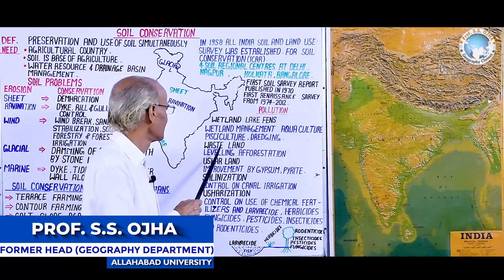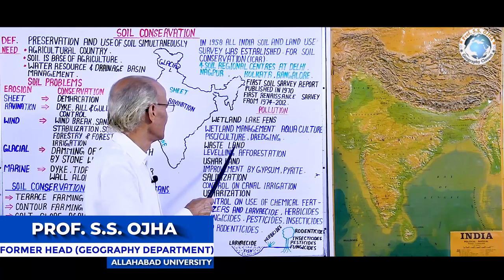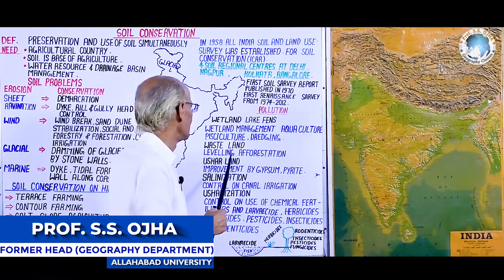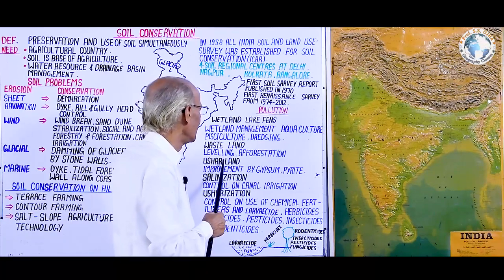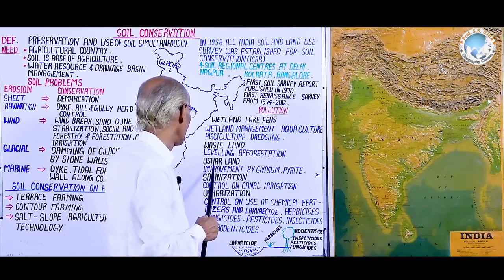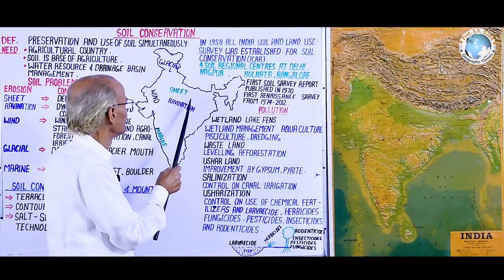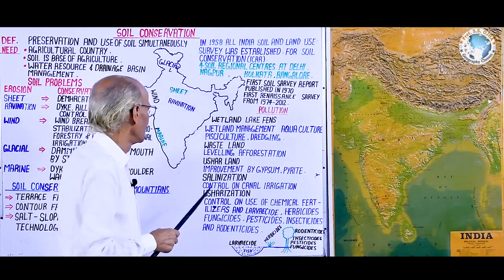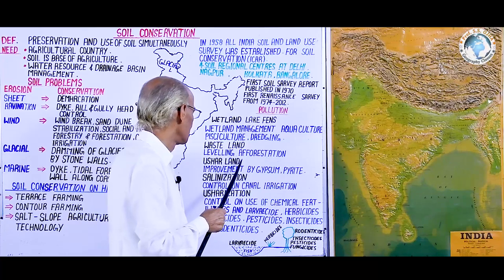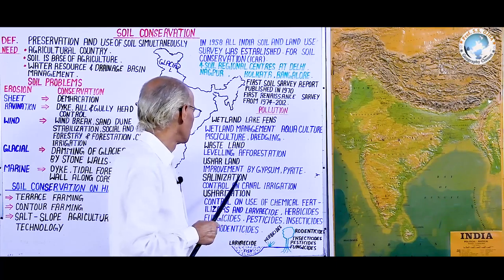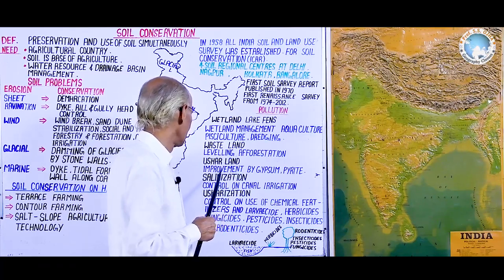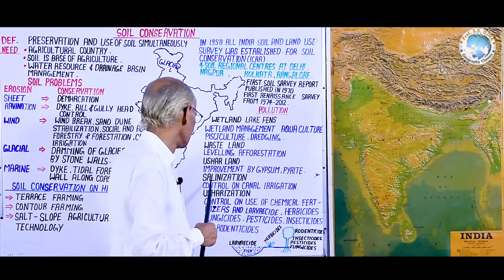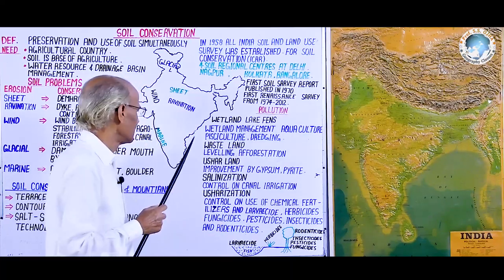The next point is wasteland — land which is neither under agriculture nor forest. Wasteland is being conserved by the Wasteland Management Department, where land is reformed and soil improved by leveling and afforestation. The next problem is usar (alkaline) land, found mostly in the northern plains of India, stretching from Pratapgarh to Sitapur. A number of measures have been used for its conservation, including use of pyrite and gypsum and demarcation of that land.